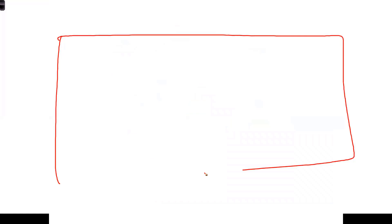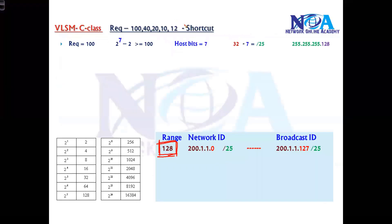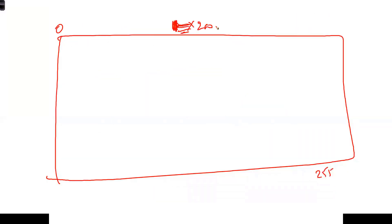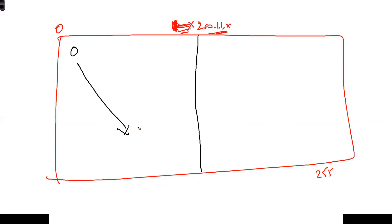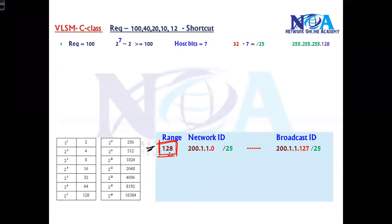Taking a Class C example with the 200.1.1.x block, we divide it into two parts and allocate from 0 to 127 — a group of 128 addresses — to a specific department. This block is allocated with the slash value of /25.